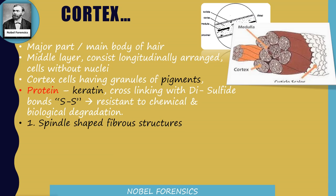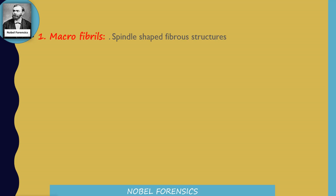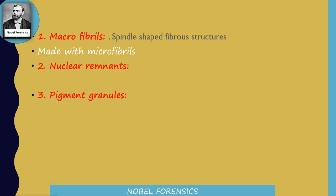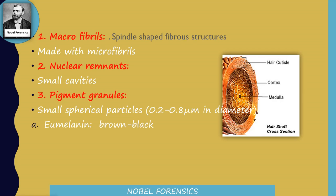The cortex also contains different elements: spindle-shaped fibrous structures (also known as microfibrils), nuclear remnants, and pigment granules. Nuclear remnants are small cavities present in the cortex. Pigment granules are usually spherical particles, smaller in size — 0.2 to 0.8 micrometers in diameter. Pigment granules mean melanin, and melanin is of two types: eumelanin and pheomelanin. Eumelanin gives brown to black color to the hair, and pheomelanin gives yellow to red color.